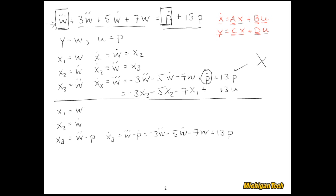Let me go work my way up. X2 dot is W double dot, and that's equal to X3 plus P, using this equation. And X1 dot is equal to W dot, and that's equal to X2.